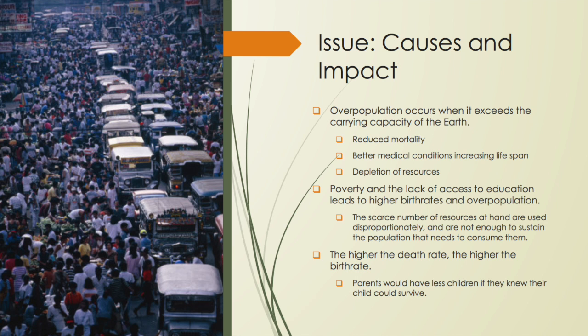Overpopulation occurs when it exceeds the carrying capacity of the earth, caused by reduced mortality, better medical conditions, increasing lifespan, and the depletion of precious resources. Poverty and the lack of access to education leads to higher birth rates and overpopulation. The scarce number of resources at hand are used disproportionately and are not enough to sustain the population that needs to consume them.